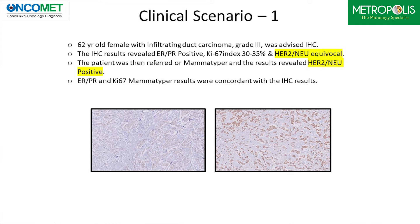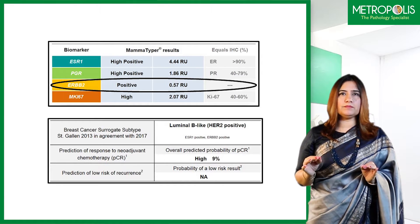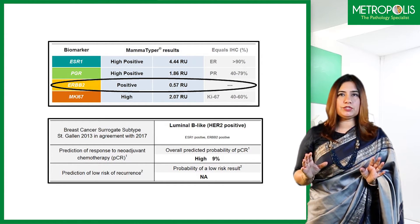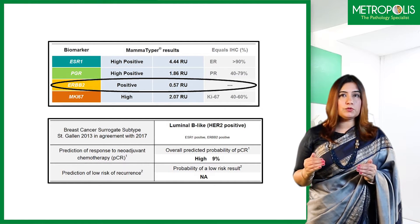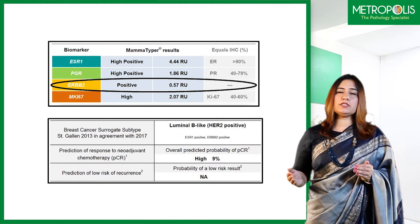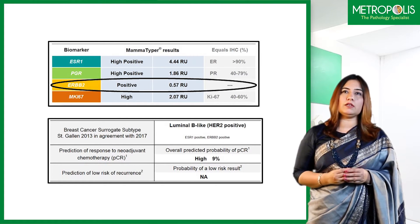Let me take you through three relevant clinical scenarios. A 62-year-old lady presented with an infiltrating duct carcinoma, high grade (Grade 3), with ER/PR positive, high KI67 of 30–35%, and equivocal HER2 — FISH was not carried out. This patient was referred for Mammotyper and the result came out to be HER2-neu positive. Very clearly HER2-neu is positive — no equivocal result — and the decision on how and when to treat and what drug to add became very simple for the medical oncologist.